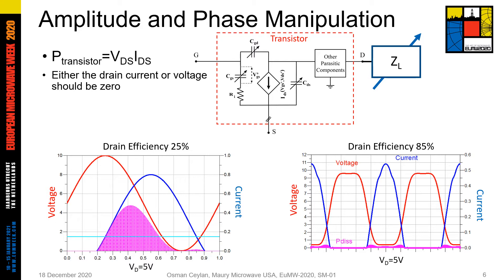My examples use the same transistor and the same biasing conditions. A load termination causing waveforms like the left one has 25% efficiency. If you can design a termination network providing waveforms like the figure at the right-hand side, the amplifier achieves 85% efficiency. As a designer, you are free to pick any load impedance and design the termination network. So, how do you know which impedance is the correct one providing maximum efficiency?